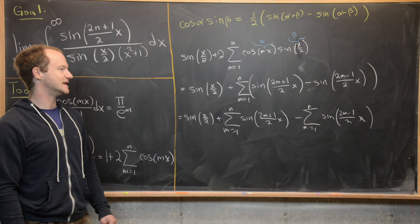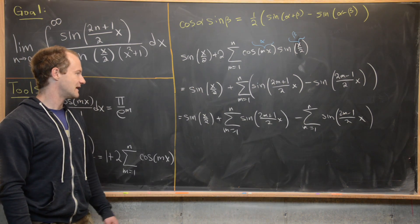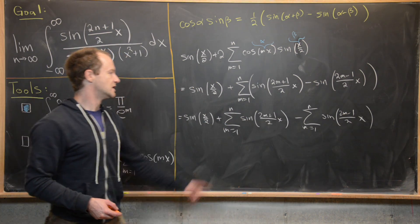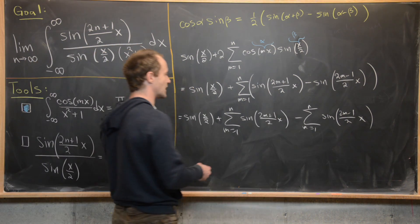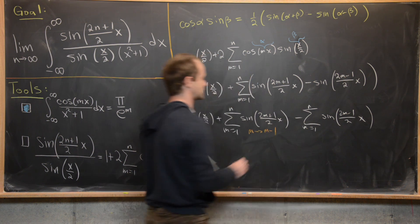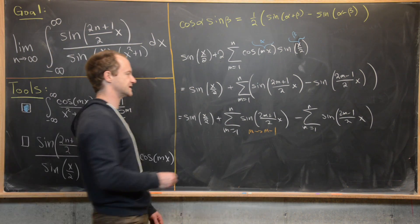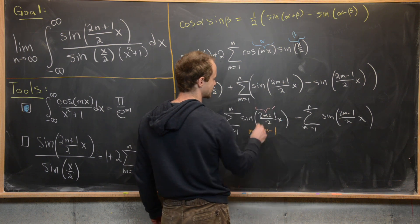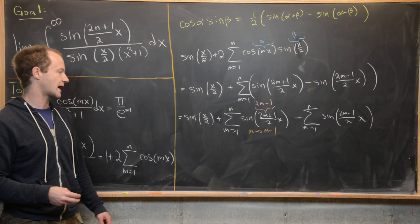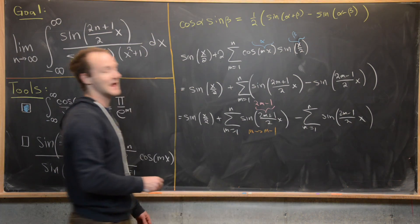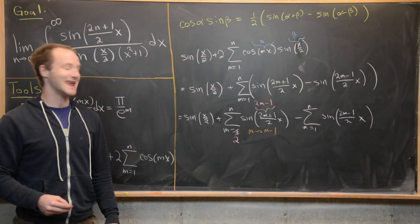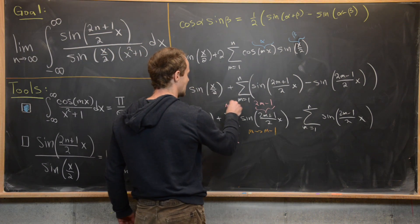We can combine these sums by re-indexing carefully. Replace m with m−1 in the first sum: the argument (2m+1)/2 becomes (2m−1)/2, the lower index becomes m=2, and the upper index becomes m=n+1.